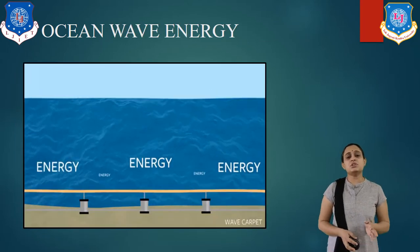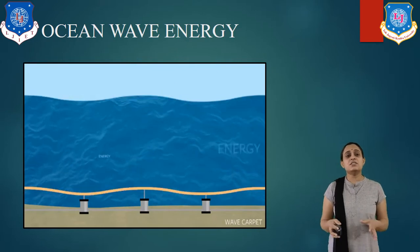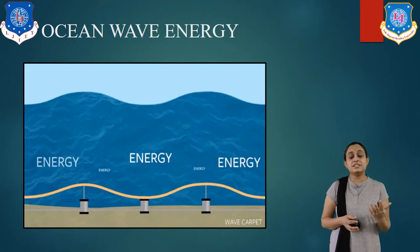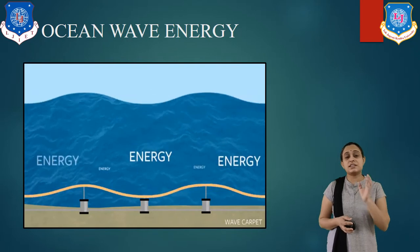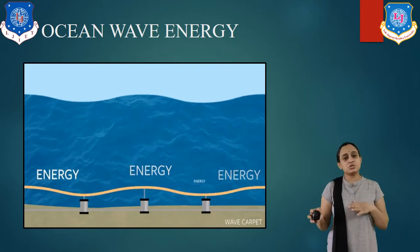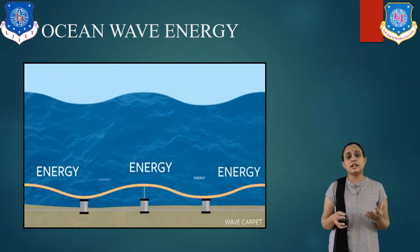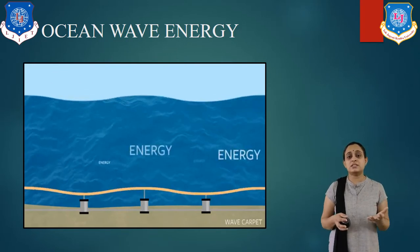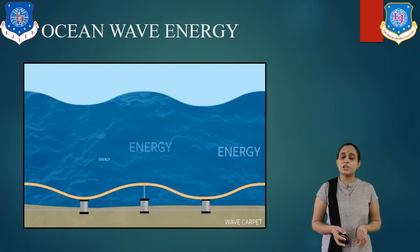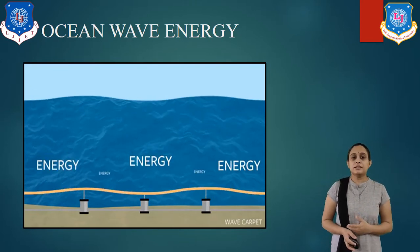Let us see ocean wave energy. Ocean waves are generated due to the rotation of the earth and winds, as discussed in the wind energy chapter, over the ocean surface. Waves have an interval of 4 to 12 seconds and peaks of up to 10 meters. This can also be used for producing electricity.